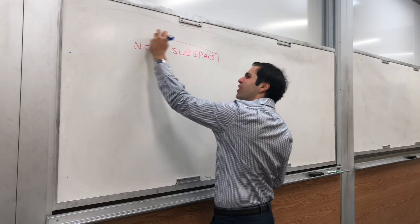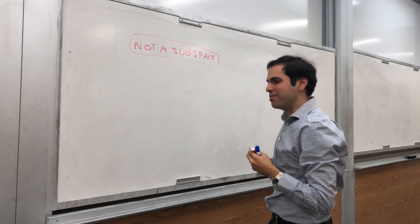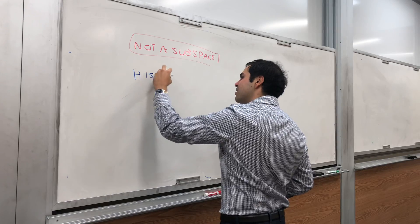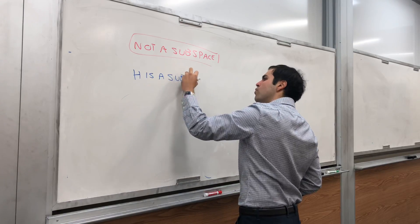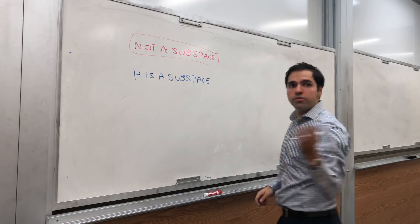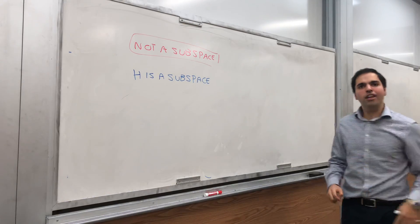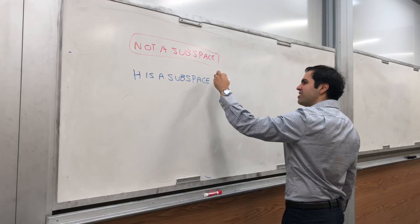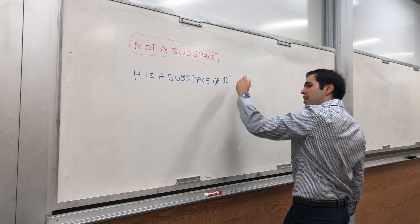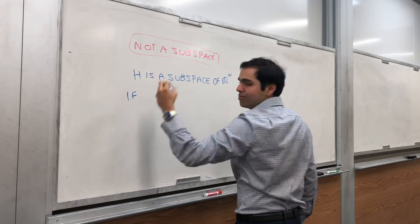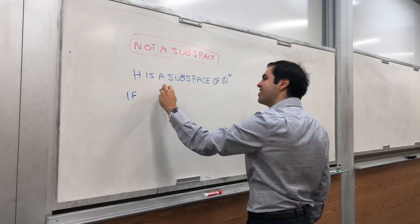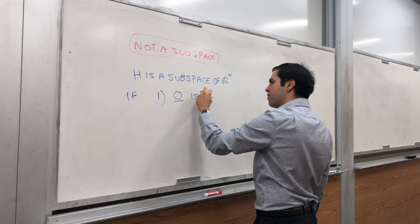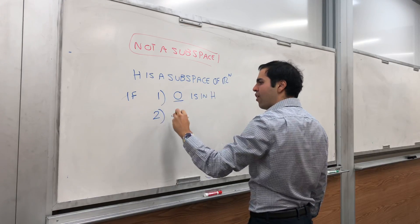And let me remind you, first of all, of the definition of a subspace. So H is a subspace of R^n. We'll do R^n this time. There are more abstract vector spaces, but that's for when I teach more advanced linear algebra. So H is a subspace of R^n if, first of all, it has to have the zero vector.